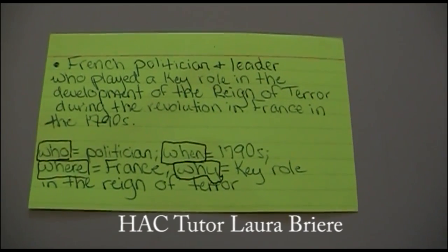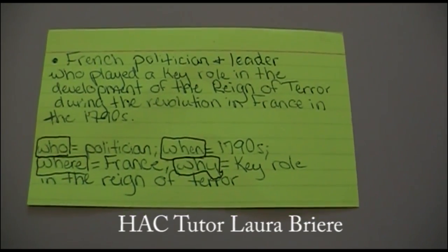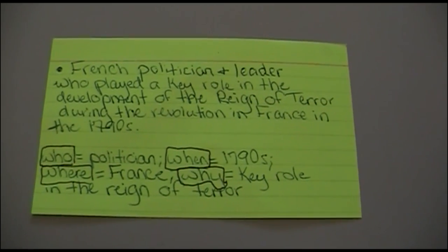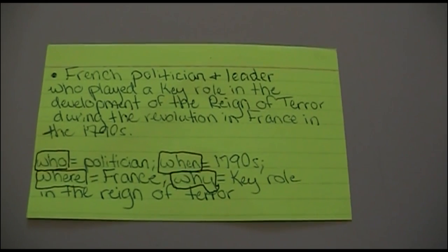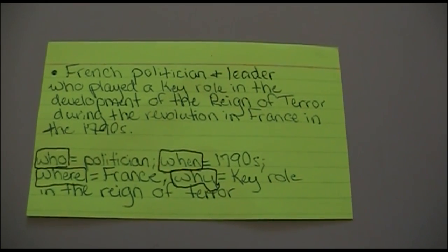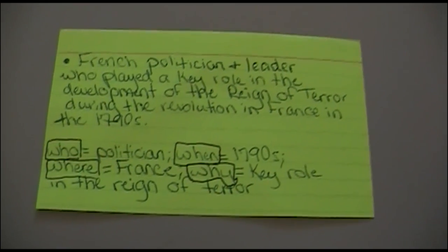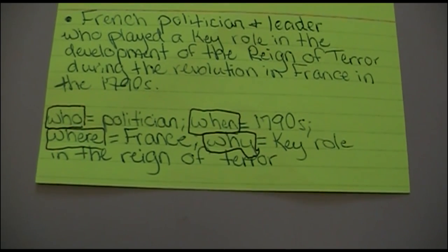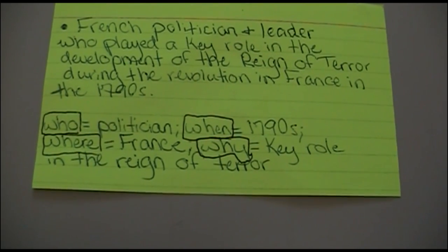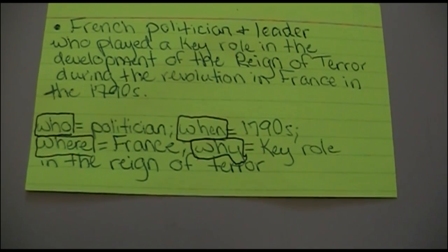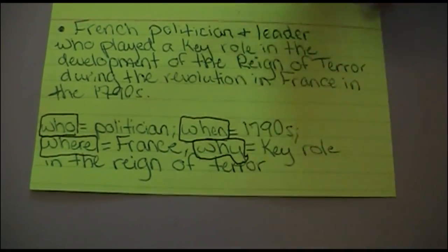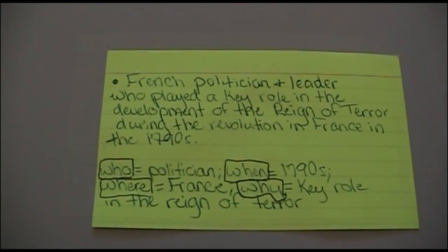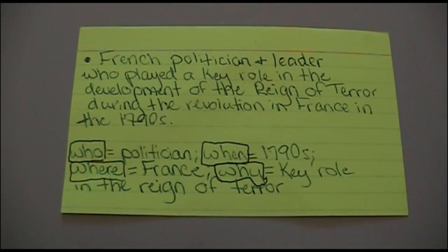This is an example of one of the study cards that I would typically make. This was for Robespierre, one of the leaders of the French Revolution. One of my professors taught me to always answer who, when, where, and why. So when I make the card, I write one or two sentences that answer those questions. Who was he? He was a French politician and leader. When? The Reign of Terror — and I also have a date, the 1790s. And why? His key role: he helped to develop the Reign of Terror.